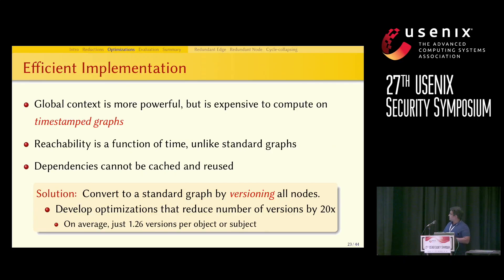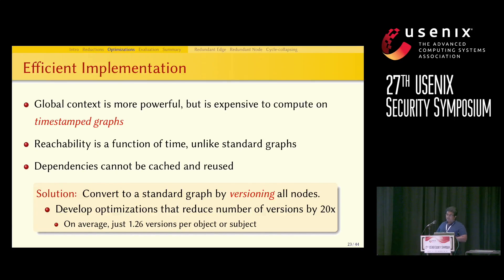Our solution is converting the timestamped graph to a standard graph by versioning the nodes. Although versioning increases storage space, we have developed optimization techniques that reduce the number of versions by 20 times. On average, only 1.26 versions are created per node in our system.